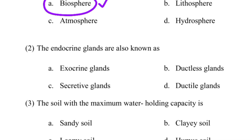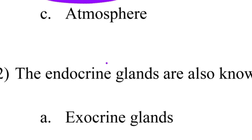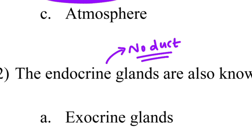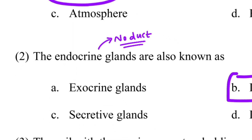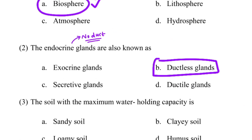Second question is from biology: The endocrine glands are also known as dash. The options are exocrine gland, ductless glands, secretive gland, and ductile gland. The answer is ductless glands — endocrine glands are also known as ductless glands.